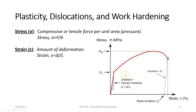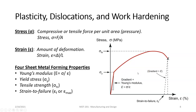Especially with cold forming: the area to the left of yield strength is the elastic area; the area to the right is the plastic area. There are four basic sheet metal properties: Young's modulus — the slope of the straight line; yield stress (sigma y), also known as yield strength; tensile stress (sigma ts) — the peak, beyond which the metal will tear or break; and strain to failure — where the metal completely separates into two or more parts.